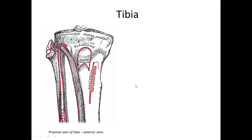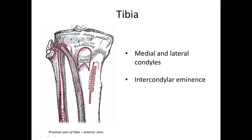At the top there are structures that connect to the femur — they are condyles, medial and lateral. To create a joint, they must have articular surfaces. Between the condyles we see something like a heel, and we call it the intercondylar eminence. What is characteristic on the anterior surface, as you probably guess, is the tibial tuberosity.